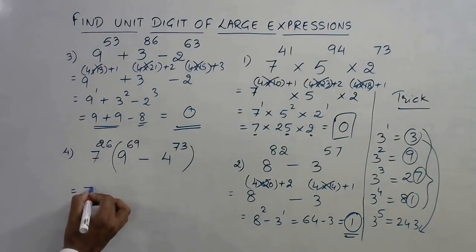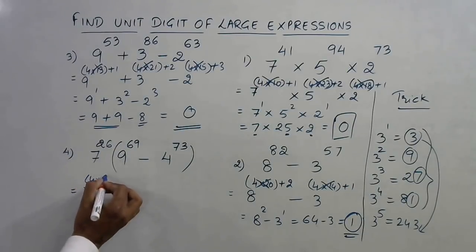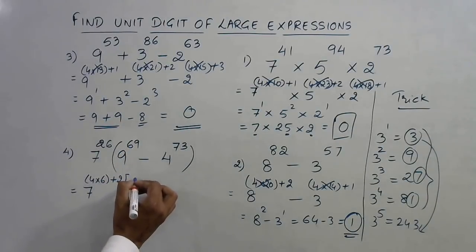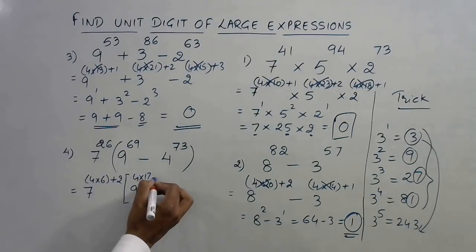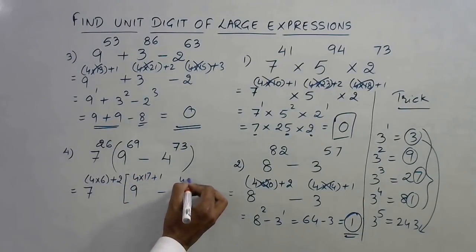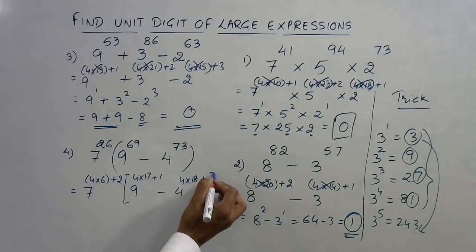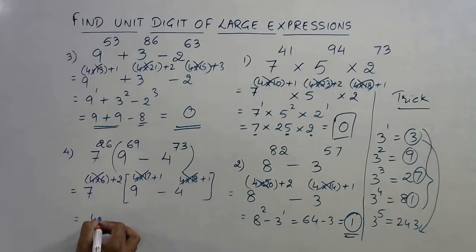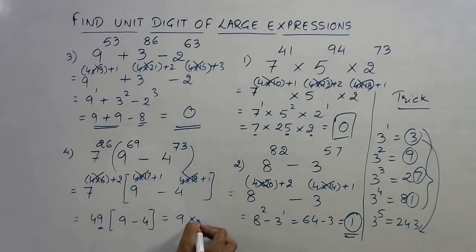Likewise, here 7 raised to power 26, 24 is divisible by 4, so 4 into 6 is 24 and you have 2 left out. Then 9 raised to power 69, 69 means 17 into 4 is 68 and 1 left out. Here we have 4 into 18 is 72 plus 1 left out. Eliminate all multiples of 4. You have 7 square, 49, and this is 9 minus 4. This unit digit is 9 here and 9 minus 4 is 5 here, so 9 into 5 is 45 thereby giving you a unit digit of 5.